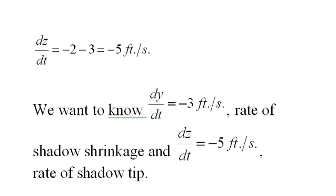Now remember, in the beginning of the problem, we want to know dy/dt, which we now know is negative 3 feet per second, the rate of the shadow shrinkage. And dz/dt, which we now know to be negative 5 feet per second, is the rate of the shadow tip moving toward the lamppost.